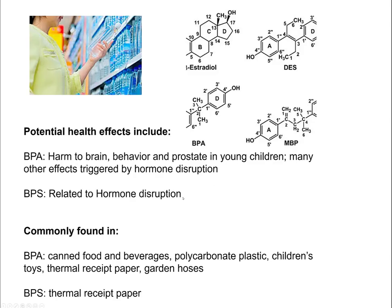Chemicals known to be endocrine disruptors include diethylstilbestrol (DES), dioxin-like compounds, polychlorinated biphenyls, DDT and some other pesticides. BPA causes harm to the brain, behavior, and prostate in young children. Increasing female hormones in men through endocrine disruption can cause men to develop certain female characteristics, and vice versa. Growth hormones for bovine — BST and similar compounds — have also been of concern. BPA is found in thermal receipt papers, plastics in bottles, children's toys, and canned foods, where the interior metal coating leaches BPA or BPS causing hormone disruption.